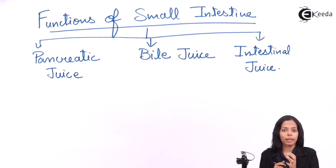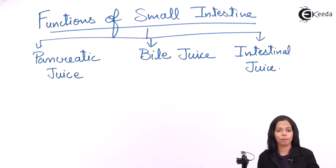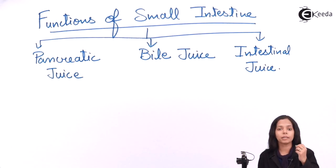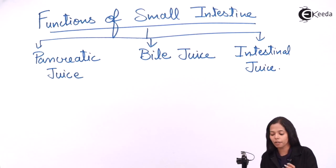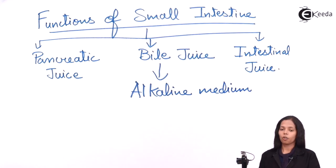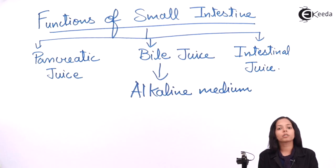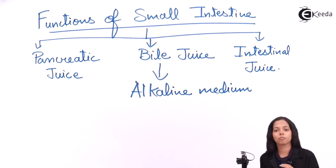In the small intestine, the enzymes will get activated only when the medium is alkaline. Before the acidic food from the stomach passes into the small intestine, it needs an alkaline medium, and this alkaline medium is created by bile juice. Bile juice is formed in the liver and stored in the gall bladder, and there is a common duct through which this bile juice enters the small intestine.